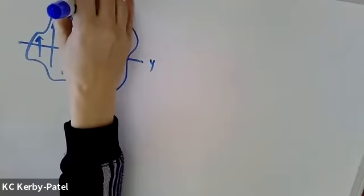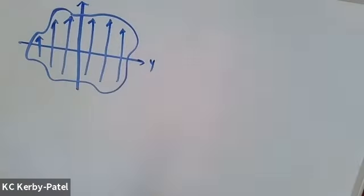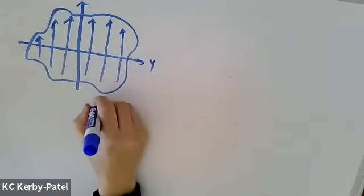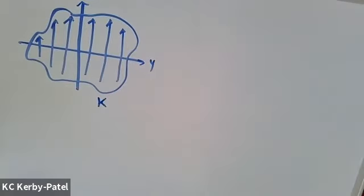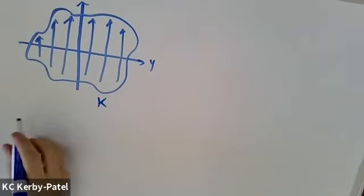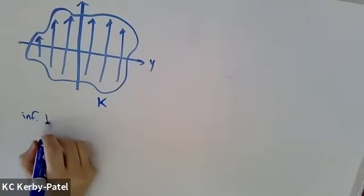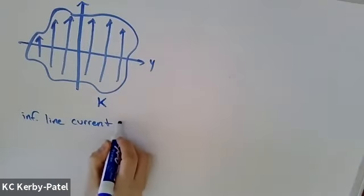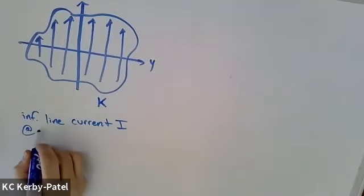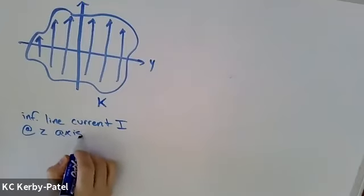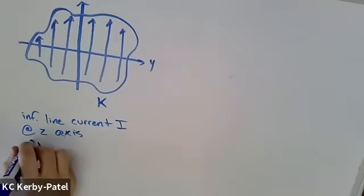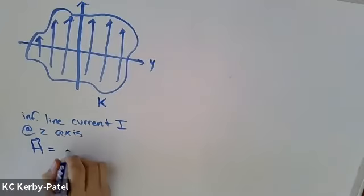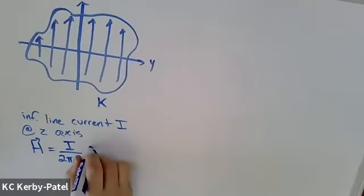In the yz plane, that surface current has a value K. But we already know from an earlier problem that an infinite line current on the z-axis produces a magnetic field that is that current divided by 2π rho a hat phi.